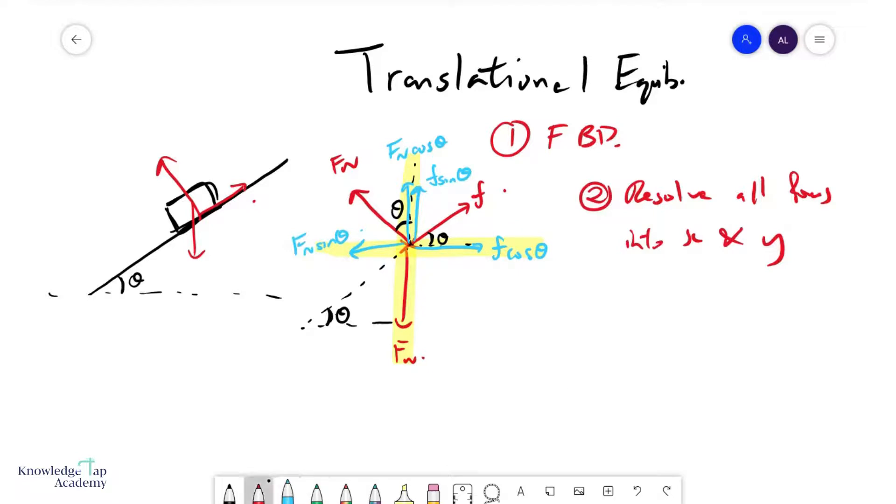Now, if you are in translational equilibrium, then the summation of all the horizontal forces must be zero, and the summation of all the vertical forces must be zero.